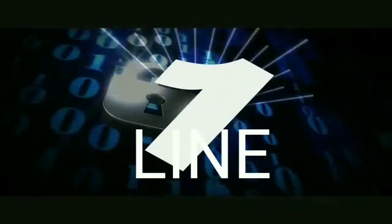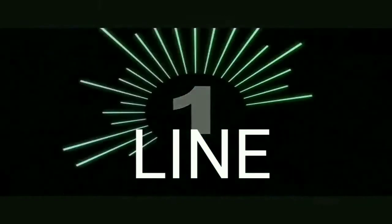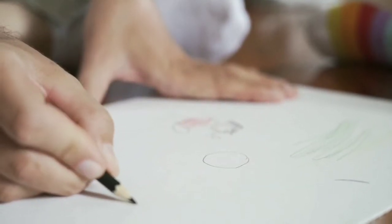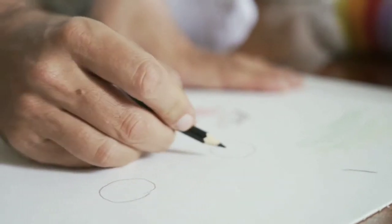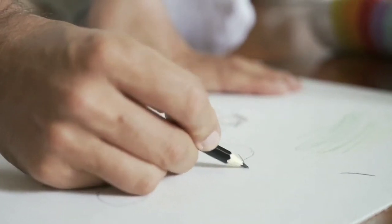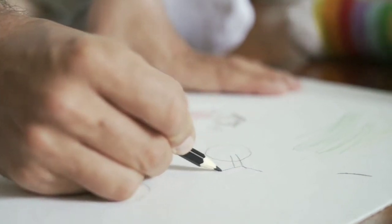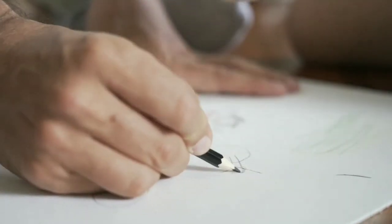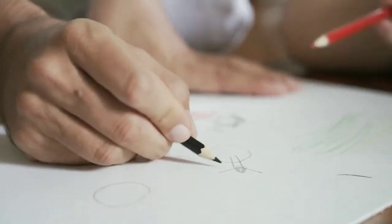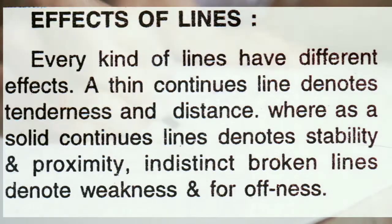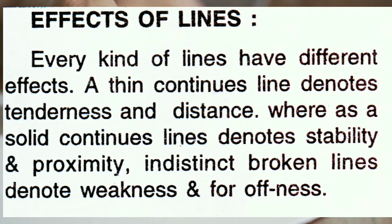First, coming to the line. What is a line? Whenever points are joined with each other, it makes a line. Lines define the shape in a picture and also separate one shape from another. Every kind of line has a different effect. A thin continuous line denotes tenderness and distance, whereas a solid bold continuous line denotes stability and proximity.